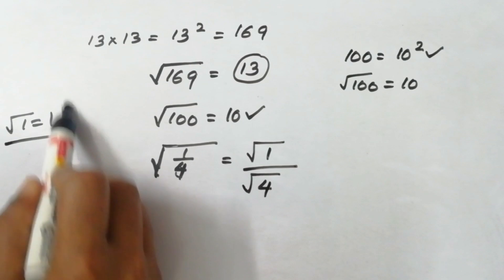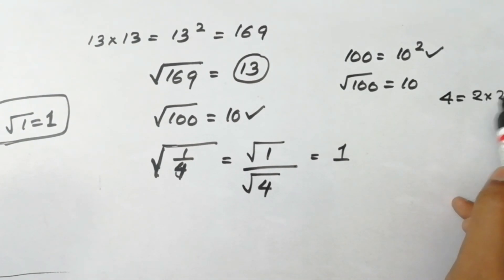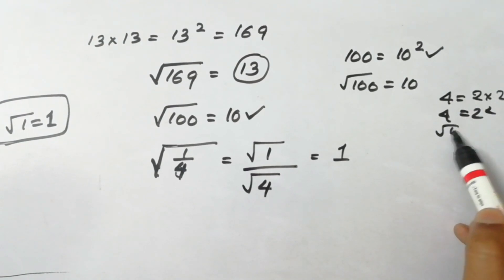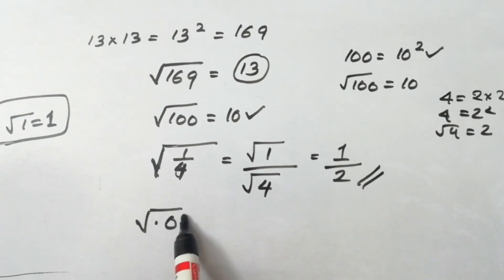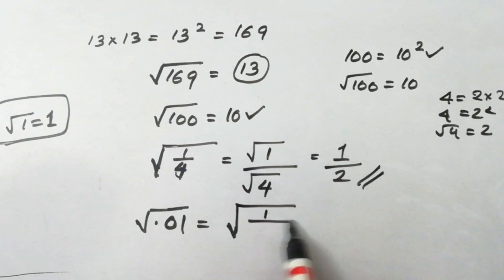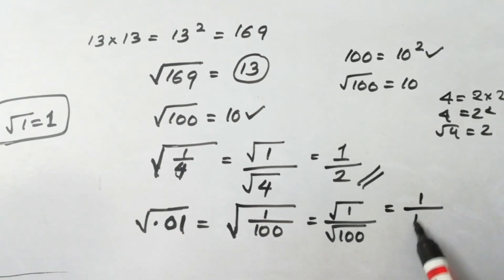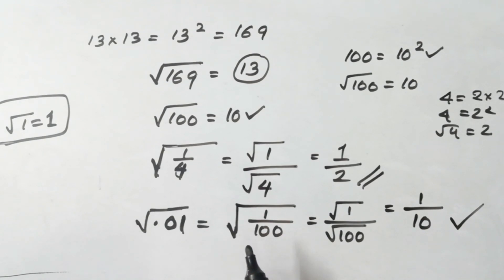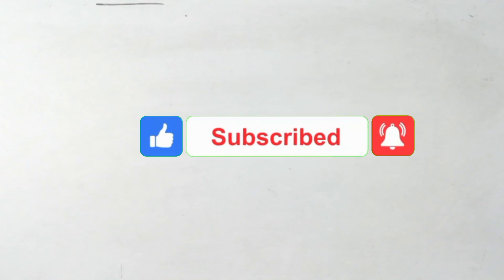If you see root 1, and root 1 is 1, then root 1. If this is root 4, then 4 is equal to square — 2 into 2 is equal to 4. Root of 3 is equal to 1 by 2. I will give you another point in the description of this video. Subscribe to our channel.